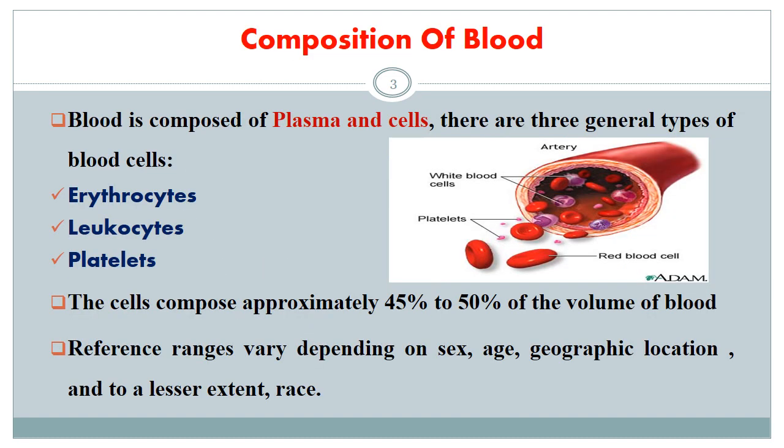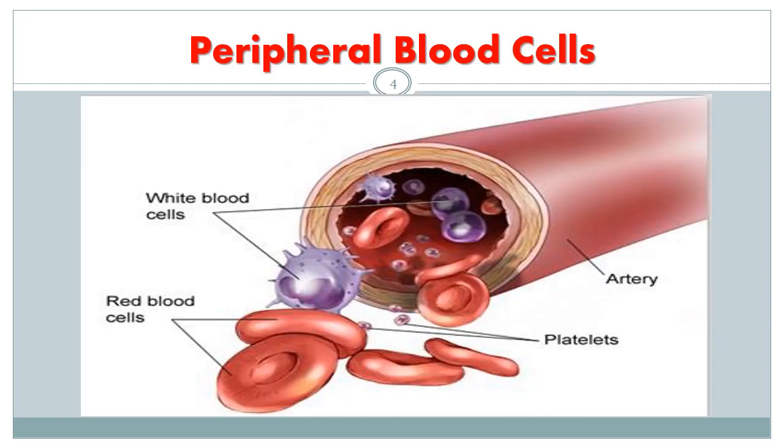Blood is composed of plasma and cells. There are three types of blood cells: erythrocytes, leucocytes, and platelets. These cells compose approximately 45% to 50% of the volume of blood. Reference ranges vary depending on sex, age, geographical location, and to a lesser extent, race. Peripheral blood cells are white blood cells, red blood cells, and platelets.